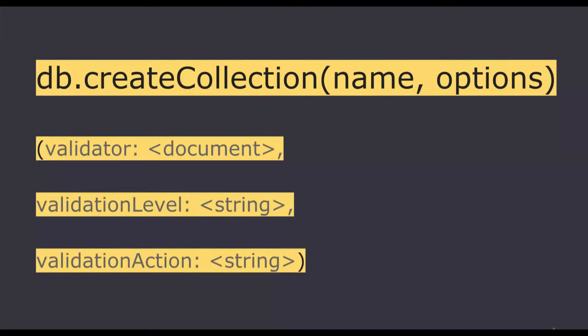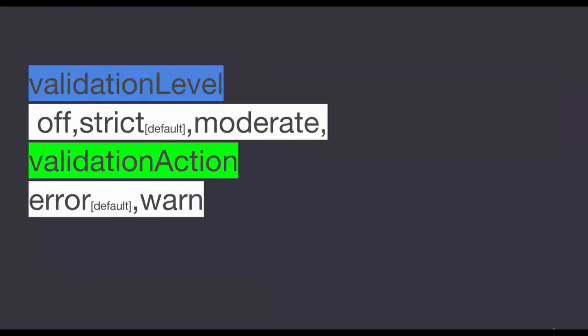This is the syntax for the create collection method. We have name and options. For the validation options, the validation level has three statuses: off, strict — which is the default — and moderate.